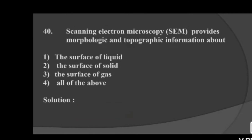Last question: scanning electron microscopy provides morphological and topographic information about — option 1: the surface of liquid, option 2: the surface of solid, option 3: the surface of gas, option 4: all of the above. Scanning electron microscopy provides morphological and topographic information about the surface of solid — option 2 is correct.